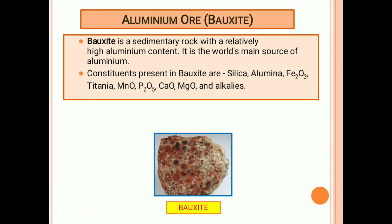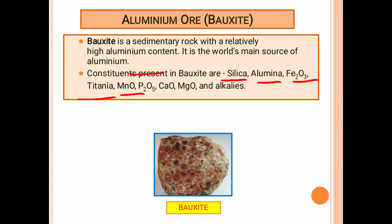That concludes phosphate rock ore determination. The final ore in our syllabus is aluminum ore, which is simply bauxite. Bauxite is a sedimentary rock with a relatively high aluminum content and is the world's main source of aluminum. The constituents mainly present in bauxite are: silica (SiO₂), alumina (Al₂O₃), ferric oxide, titania, manganese oxide, phosphorus pentoxide, calcium oxide, magnesium oxide, and alkalis.